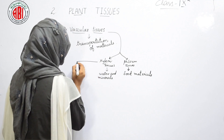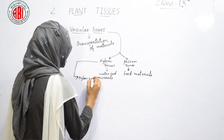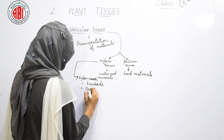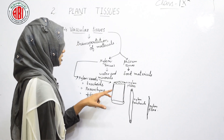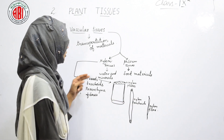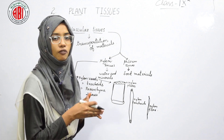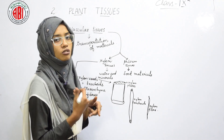Now let us talk about the structure of xylem tissues. Xylem tissues show xylem vessels, xylem tracheids, xylem parenchyma, and xylem fibers. Xylem vessels are elongated structures with perforated plates called xylem plates at their ends. Xylem tracheids are also elongated, and the thin fiber-like or thread-like structures are called xylem fibers. These help in the transportation of water and mineral ions from the soil to the different parts of the plant.